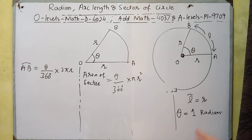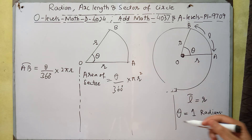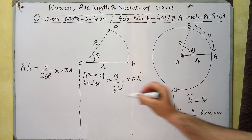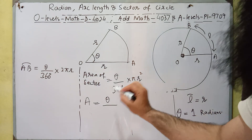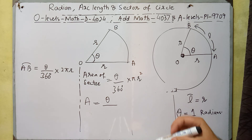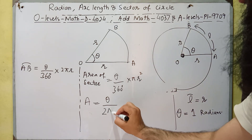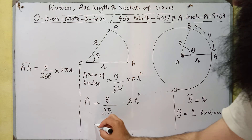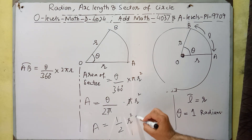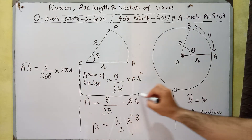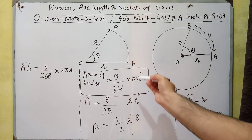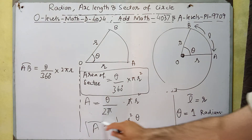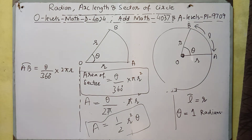We can also derive another formula using radians. Area equals theta over 360 degrees, but if we write the angle in radians, we replace 360 with 2π radians and multiply by πr squared. This simplifies to area equals one-half r squared theta. So if the angle is in degrees, use the first formula; if the angle is in radians, use area equals one-half r squared theta.